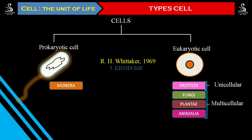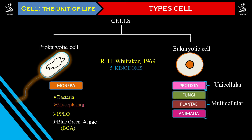In Kingdom Monera, the types of organisms included are bacteria and mycoplasma. Mycoplasma is the smallest cell — these are organisms that can survive without oxygen, and they cause disease to plants and animals. It also includes PPLO (pleuro-pneumonia like organisms) and blue-green algae (BGA). All organisms belonging to Kingdom Monera are microscopic only — you must observe them under a microscope and cannot see them with the naked eye.